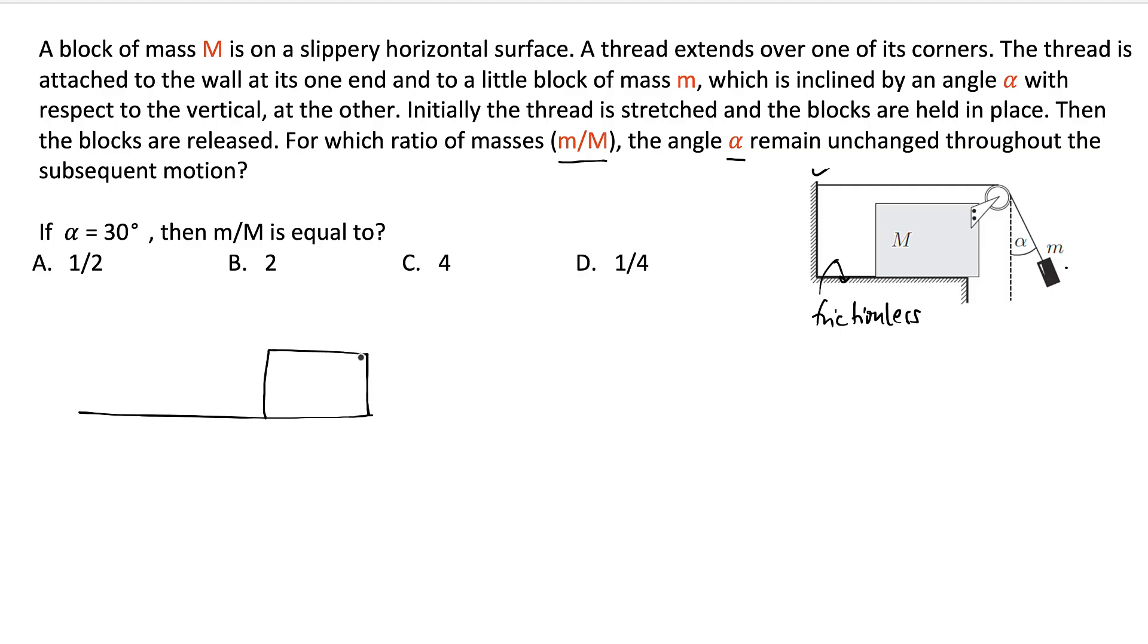There is a pulley attached here. So let's say this is the string, and the block is like this. So this is the condition for block initially.